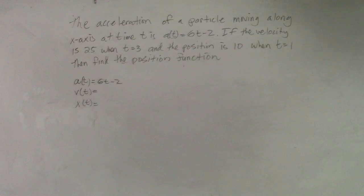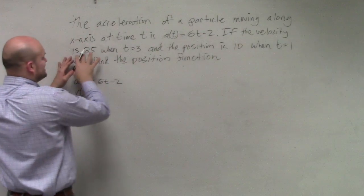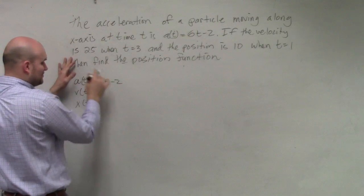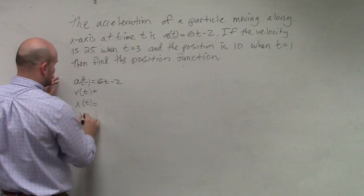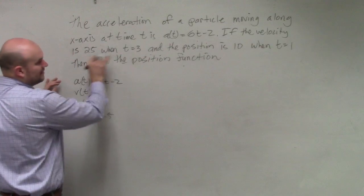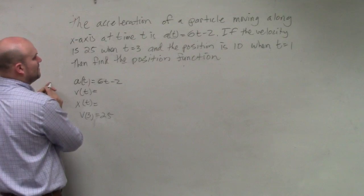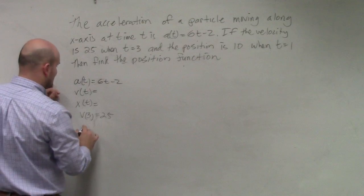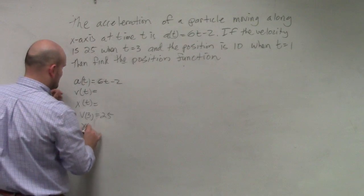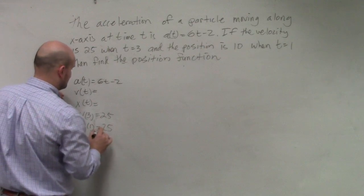And then the other thing is, they really give us these points. If velocity is 25 when t equals 3, that really means v of 3 equals 25, and the other one, the position is 10 when t is 1, so x of 1 equals 10.